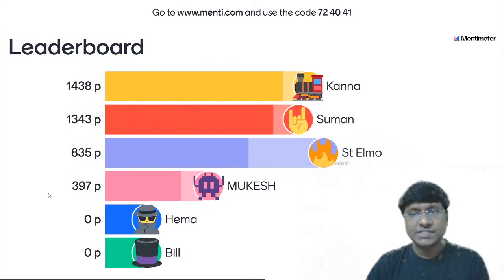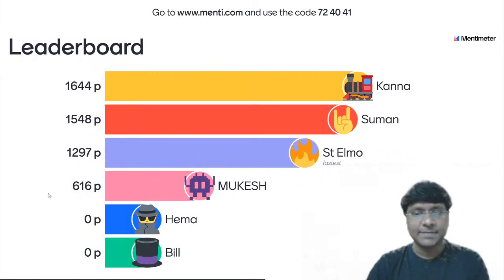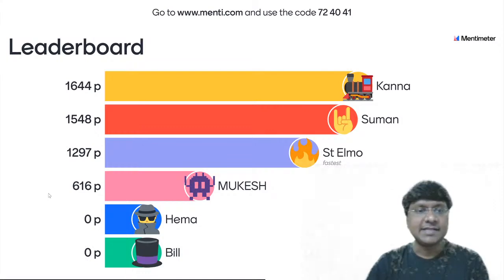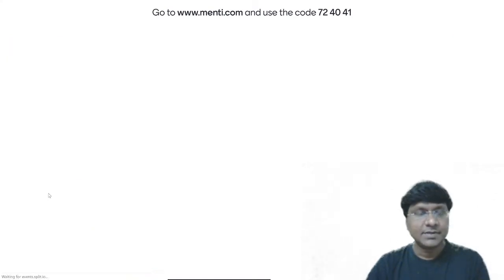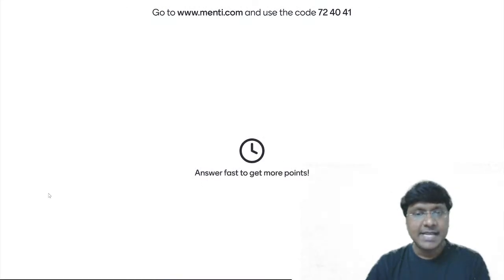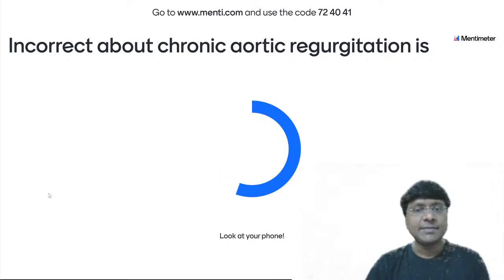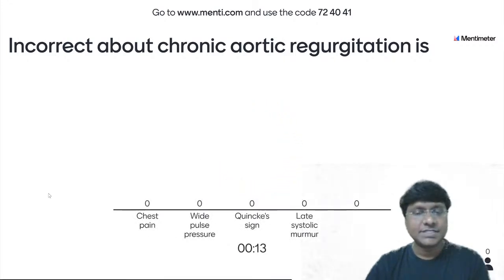The leaderboard leader is Kanna and second is Suman. Answer fast to get more points. Next question: incorrect about chronic aortic regurgitation is — chest pain, wide pulse pressure, Quincke's sign, late systolic murmur.